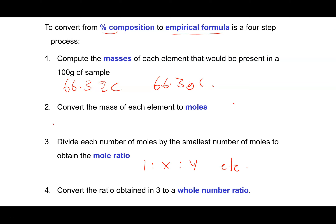If these are not whole numbers, you're going to multiply by whatever factor you need to get up to a whole number. For example, if you had 1 to 1.5 to 2, you can see that if you multiply everything by 2, that would become a whole number ratio — 2 to 3 to 4. Those whole numbers become the coefficients in your formula.